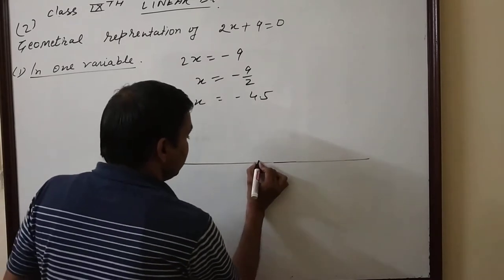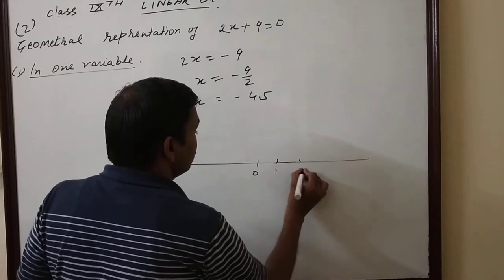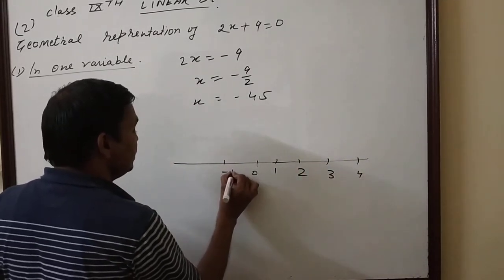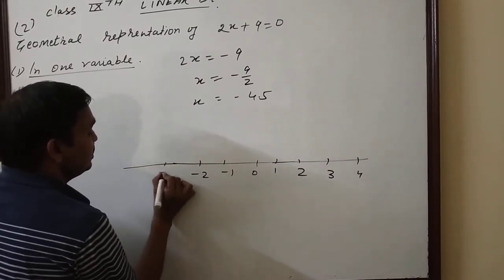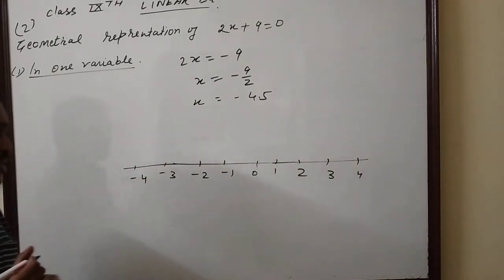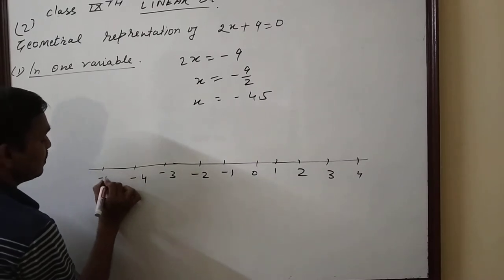This is the number line. Here we write 0, then 1, 2, 3, and 4. On the other side, this is -1, -2, -3, and -4. This point here is -4.5.